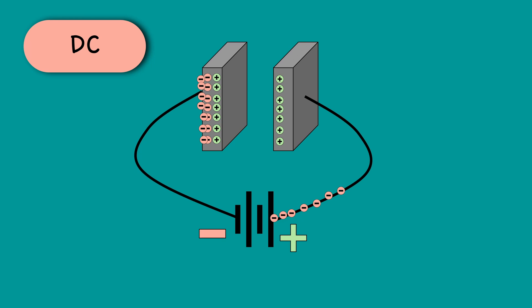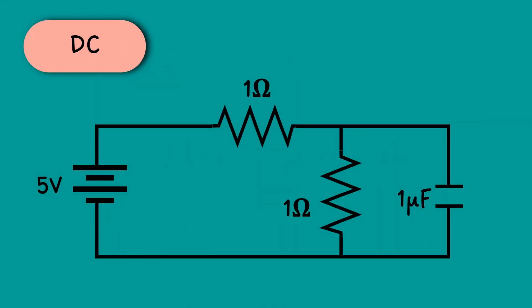That's why, while doing the steady state DC circuit analysis calculations, we always consider capacitor as an open circuit.